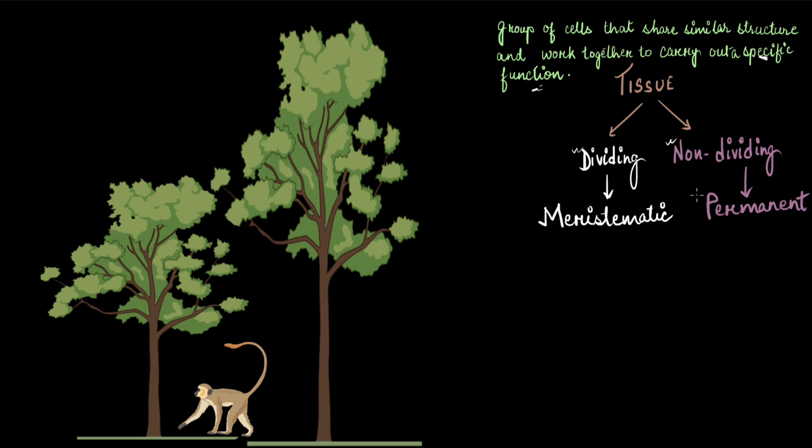Think about it - meristematic tissue has dividing cells which means it will increase in number as the plant continues to grow. On the flip side, if a tissue consists of non-dividing cells, it won't undergo division, so naturally you would expect that the number of permanent tissue would be relatively small. But in reality, it's actually the opposite.